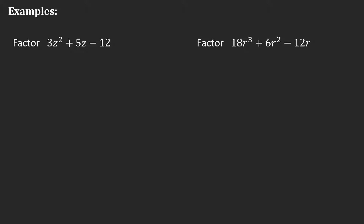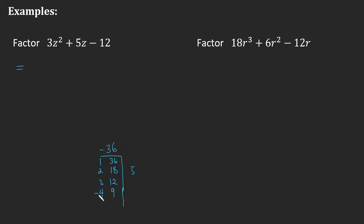Why don't you try these two examples? In the first case, there's no GCF, so we go straight into decomposition. We multiply 3 times negative 12, which gives negative 36. I need the factors of 36 that add to 5. Getting down to 4 and 9: they multiply to 36 and add to 5. To get a positive 5, the 4 has to be negative. So I decompose my positive 5x into negative 4z and positive 9z.